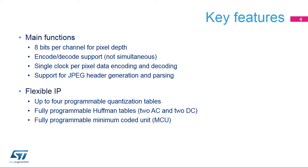allowing a throughput of 1 pixel data per clock cycle. JPEG headers can be handled automatically without any CPU load, thanks to the embedded header parser and generator. The JPEG tables needed by the Codec are fully programmable. The Codec supports up to 4 quantization tables and 4 Huffman tables.